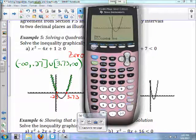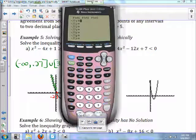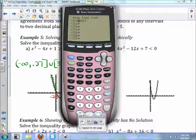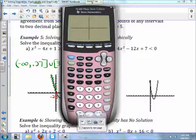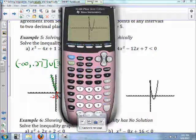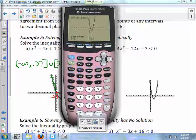Moving on to b, we'll have 4x squared minus 12x plus 7. We want to see where this is less than zero. Well, second trace, let's find my zeros.